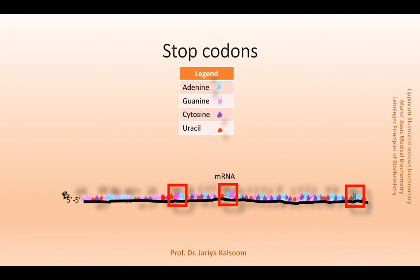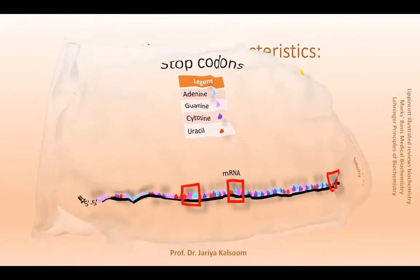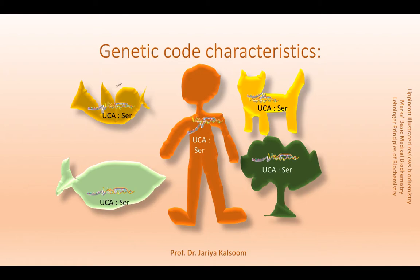The genetic code language is almost the same throughout all living organisms. The genetic code is specific or unambiguous — a particular codon always codes for the same amino acid. The genetic code is also universal; its specificity has been conserved from the very early stages of evolution, though few exceptions exist. For example, some mitochondrial codons have different meanings than those for eukaryotes — UGA is a stop codon for eukaryotes, but in mitochondrial codons it codes for tryptophan.